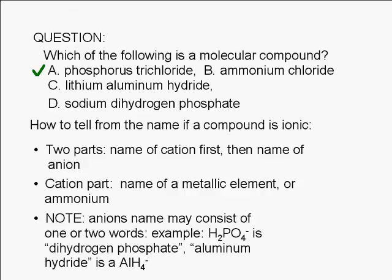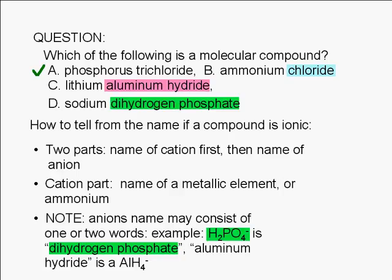Note that names of anions may consist of one word, as in choice B, or two words, as in choices C and D. The dihydrogen phosphate part of the name given in choice D refers to H2PO4 with a negative 1 charge. Aluminum hydride is a polyatomic ion with a formula of AlH4 with a negative 1 charge.